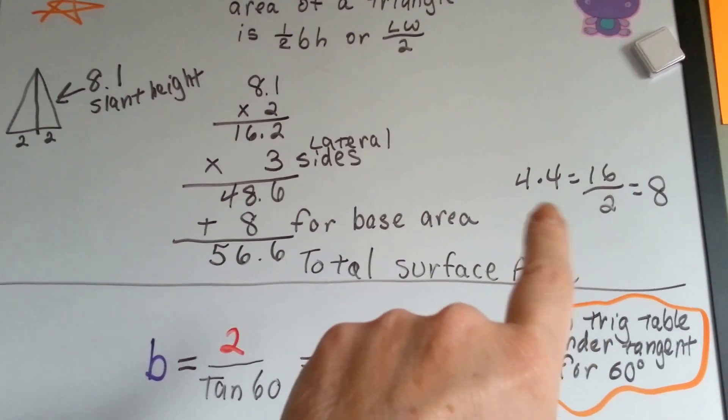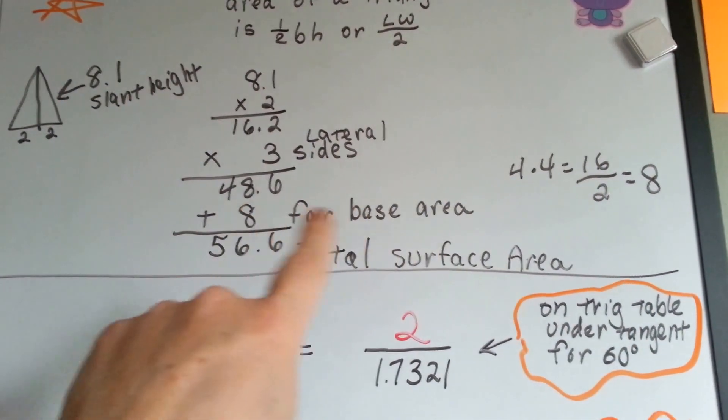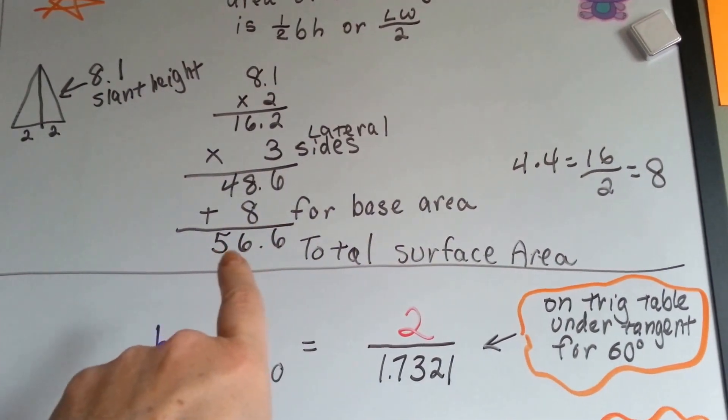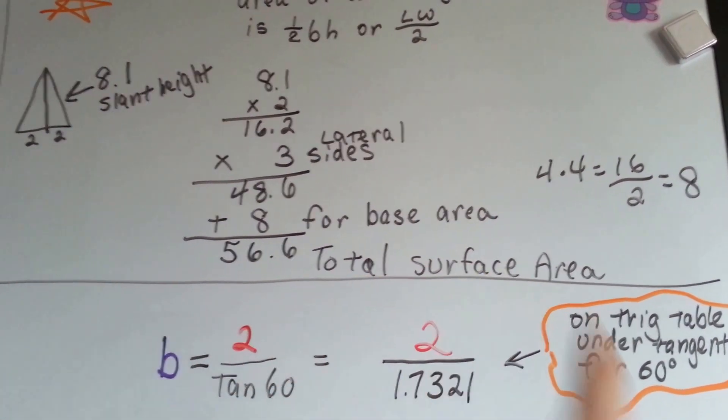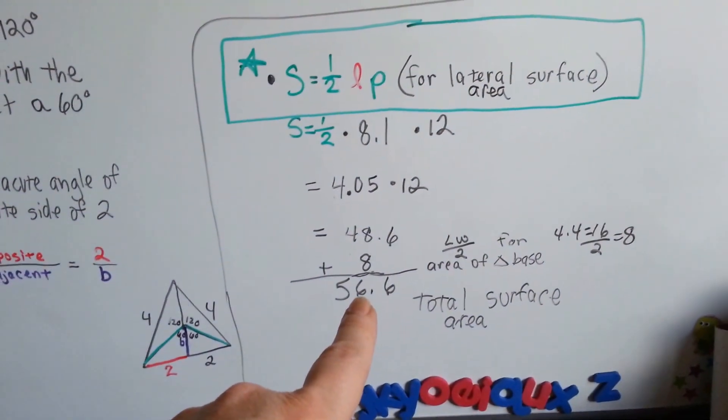We know that our base is 8 because it was 4 times 4 divided by 2. We add that for the base area and get 56.6 total surface area. And you want to know what? 56.6. 56.6.